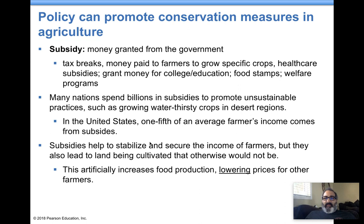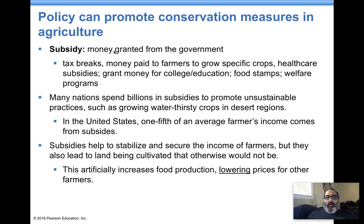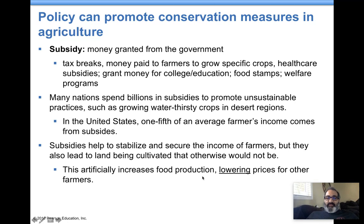Subsidies are money granted by the government. Some students get grants or subsidized loans for college. Corporations get subsidies as tax breaks. A lot of farmers get direct payments to grow certain crops. The oil and fossil fuel industry gets many tax breaks. These subsidies lower the prices of goods — this is how farmers can sell milk and eggs fairly cheaply. The government is essentially paying a percentage of a lot of the farming products in our country.